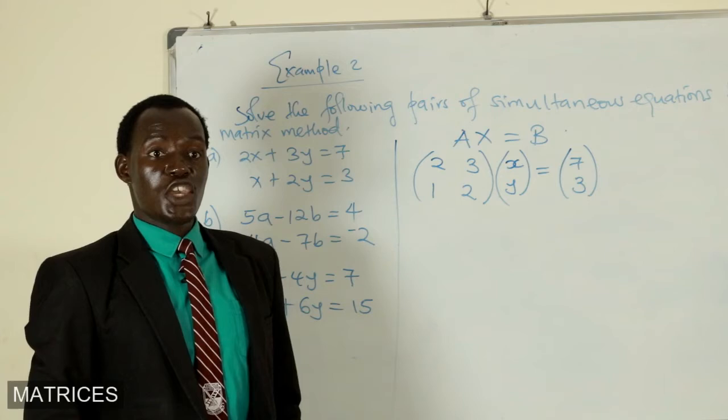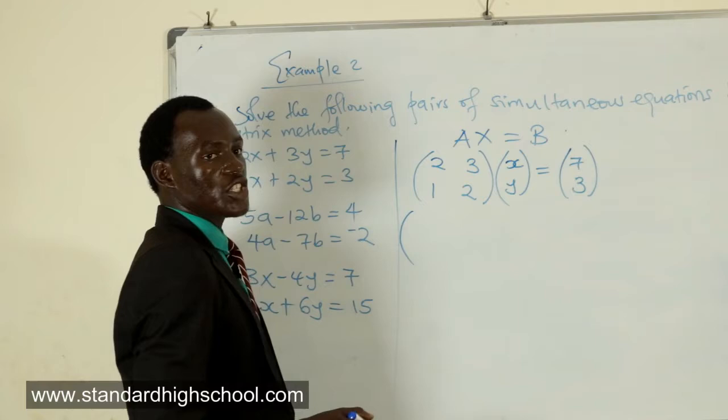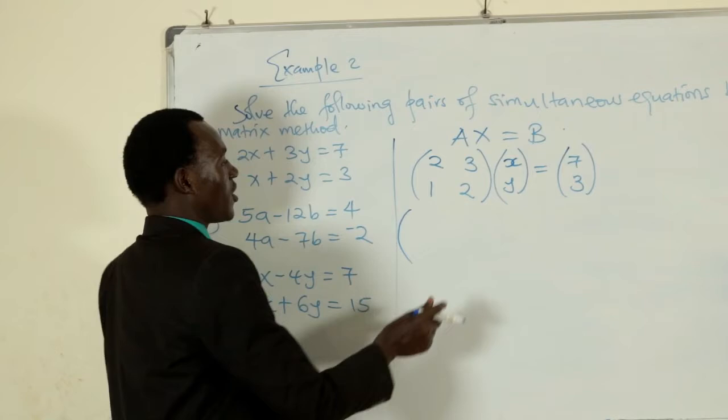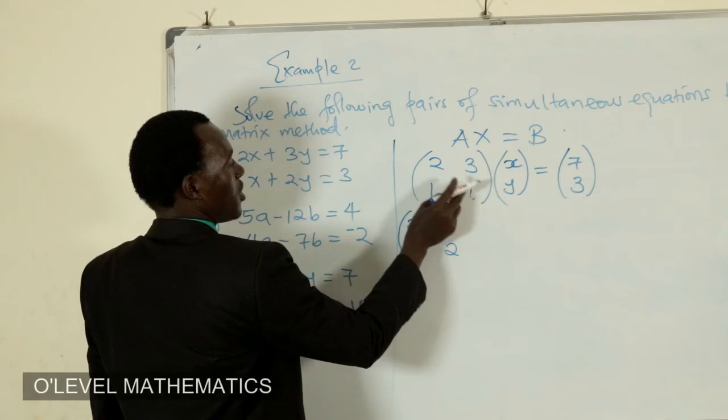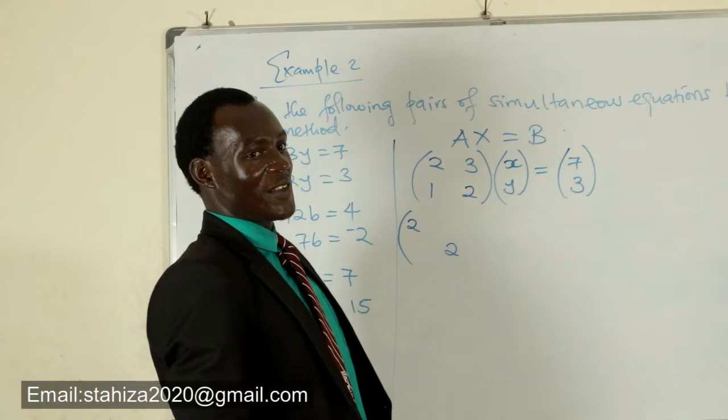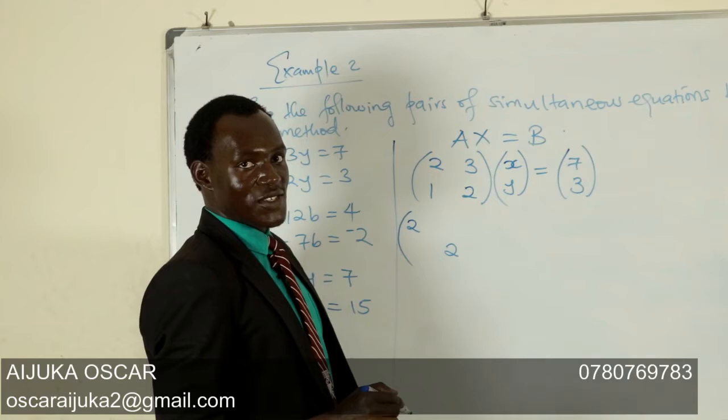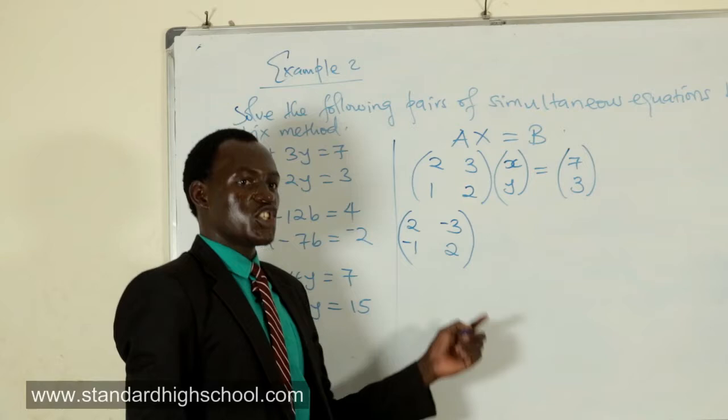The next step is to formulate the adjoint of the coefficient matrix. To formulate the adjoint, we interchange elements in the major diagonal. We have a 2 and this is a 2, so this is just the same number. If it was 2, 3, 1, 1, you would have a 1 here and then a 2 there. Then for the elements in the minor diagonal, we change their signs. This is positive 3, so it shall become negative 3, and this is 1, we write negative 1. This is the adjoint.